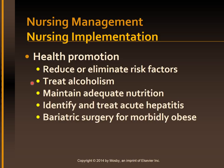Alcoholism must be treated; urge patients to avoid alcohol ingestion and support their efforts. Adequate nutrition, especially for alcoholic and other individuals at risk for cirrhosis, is essential to promote liver regeneration. Identify and treat acute hepatitis early so that it does not progress to chronic hepatitis and cirrhosis. Bariatric surgery for morbidly obese individuals has been shown to reduce liver disease occurrences.